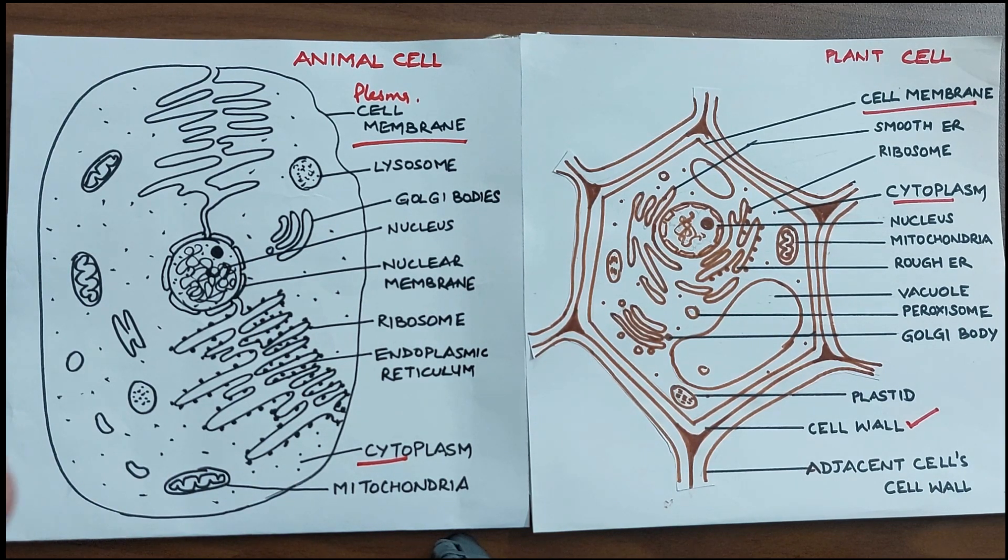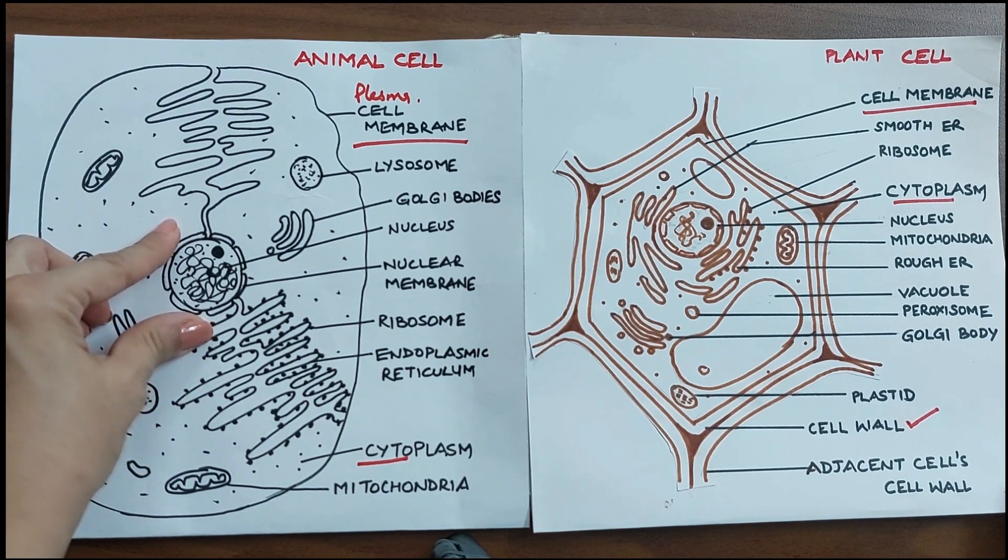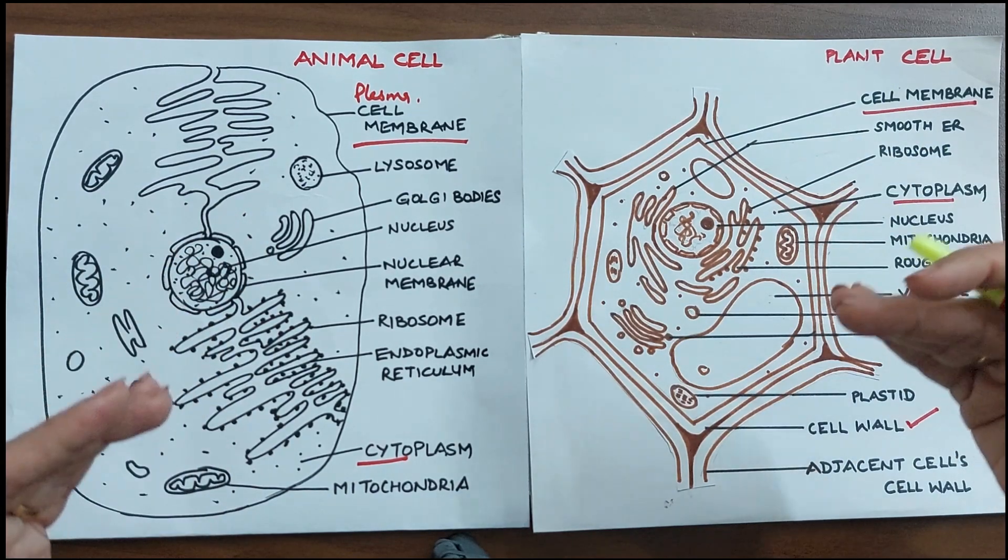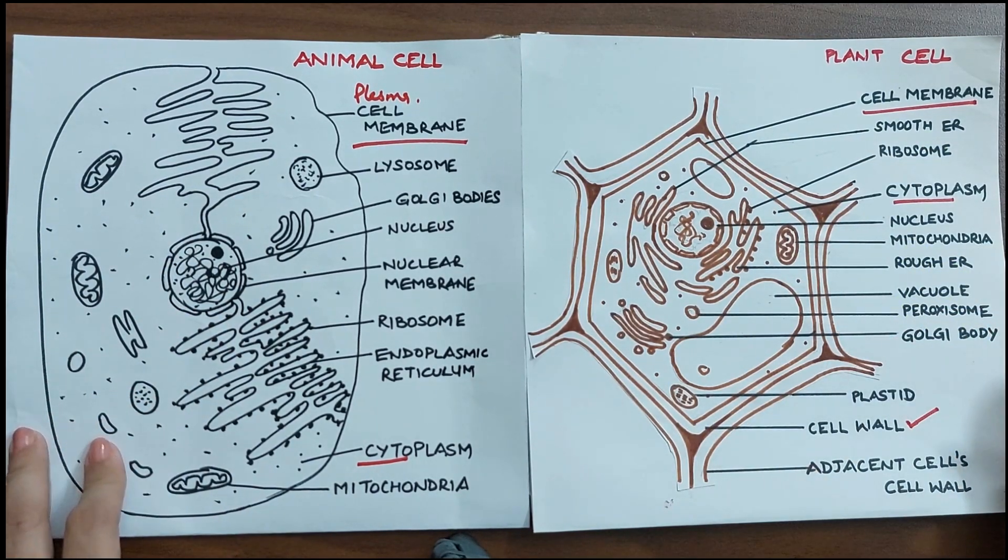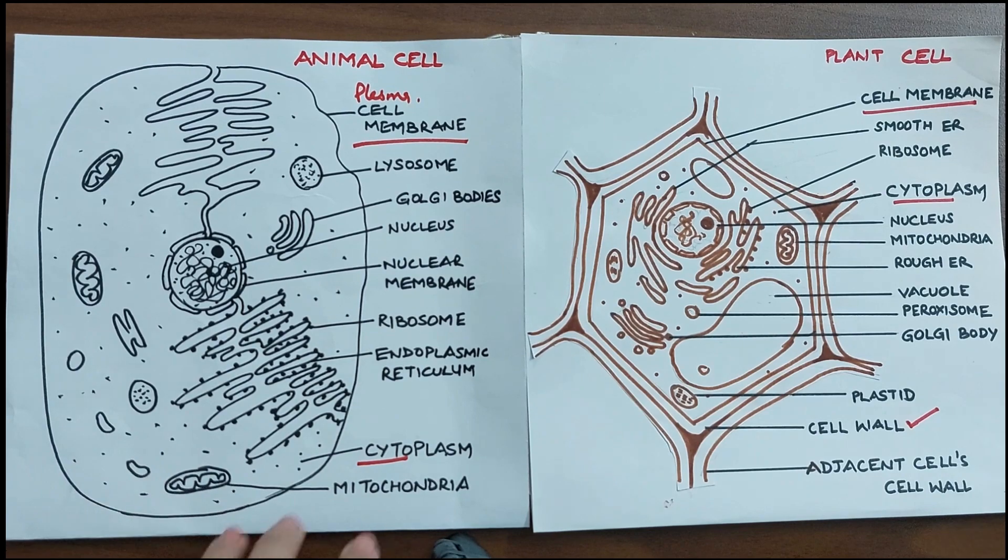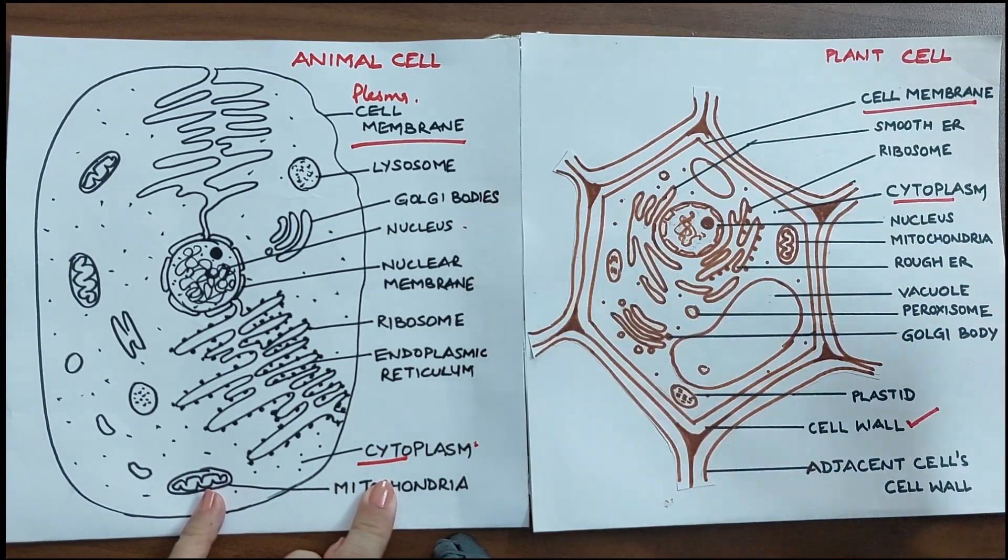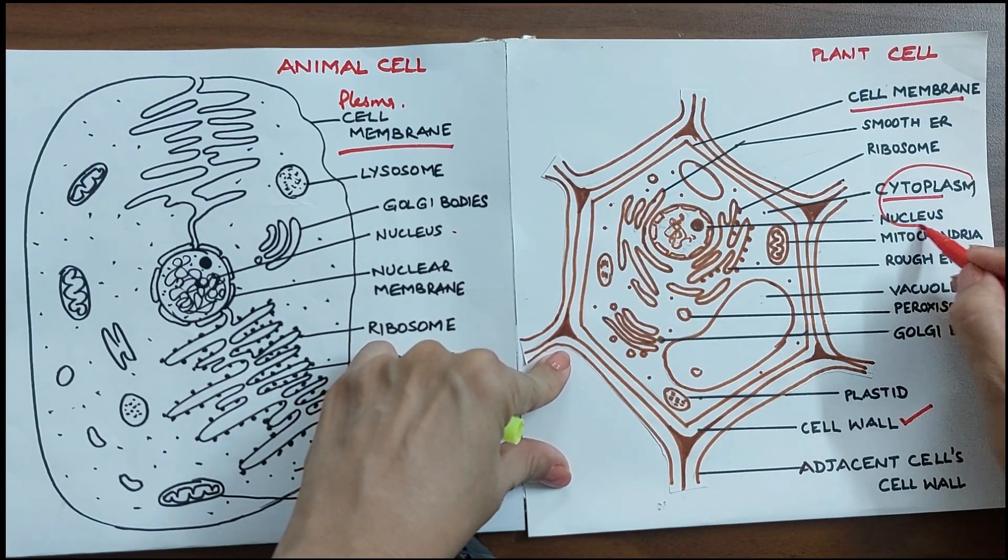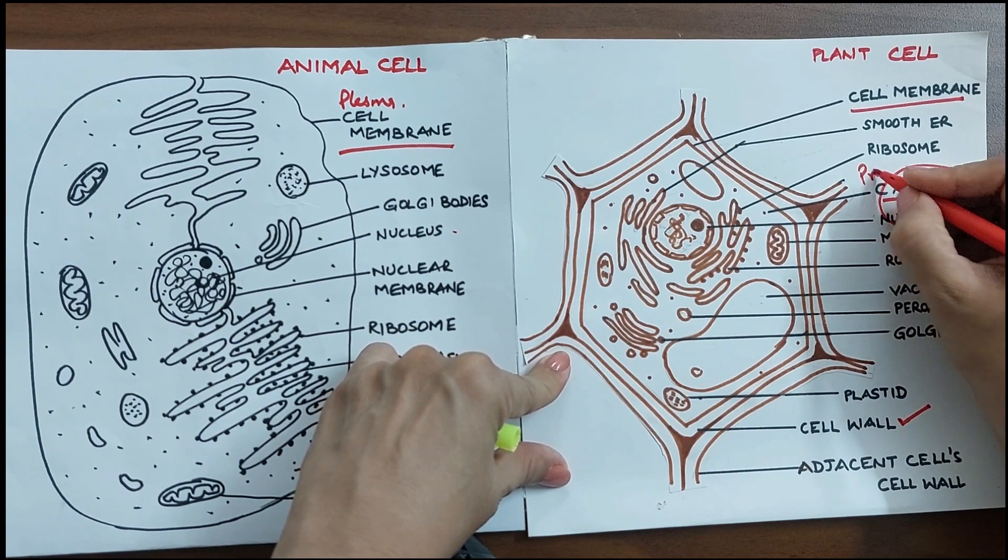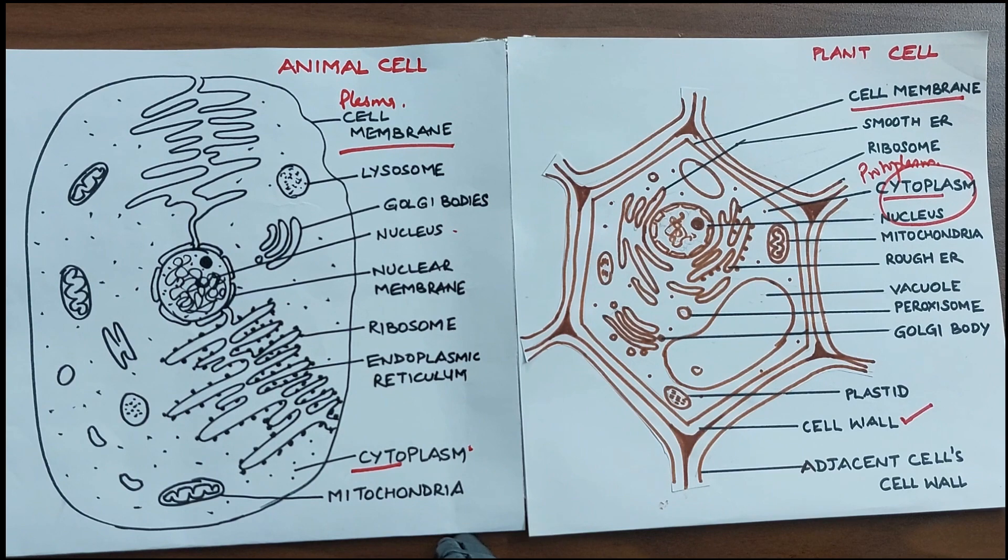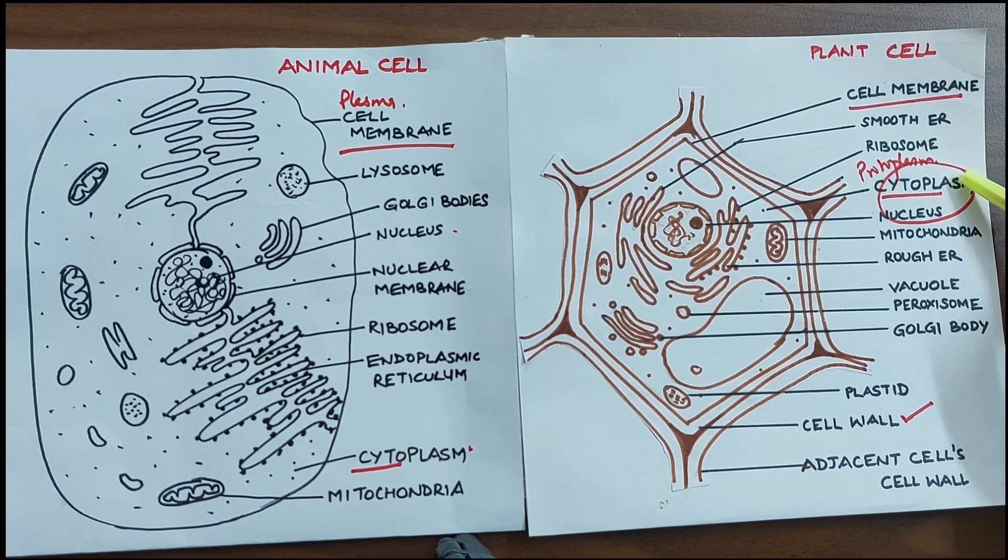Then we have the major part which is the nucleus. The nucleus is also present both in plant and animal cells. It is centrally located. We are going to look at the structure of the nucleus in the subsequent part of the video, but what I'm trying to say here is that the cytoplasm and the nucleus together is known as protoplasm. If you have come across the term protoplasm, it is basically nothing but cytoplasm and nucleus together inside a cell, whether it is an animal cell or a plant cell.